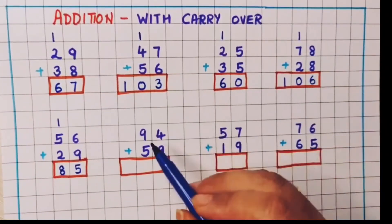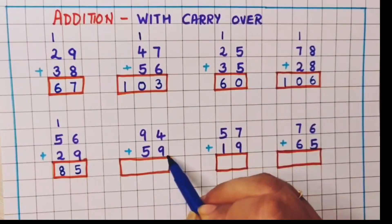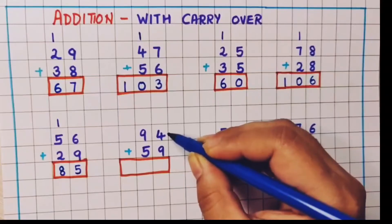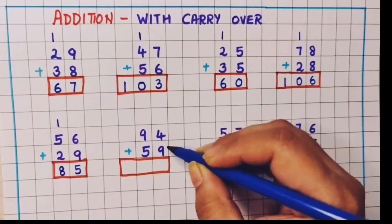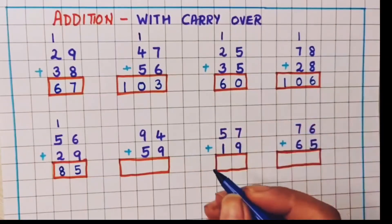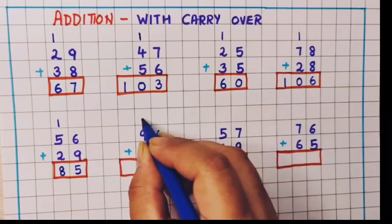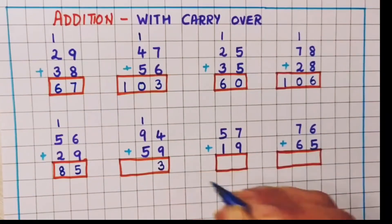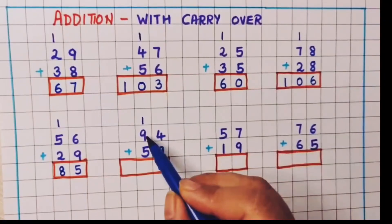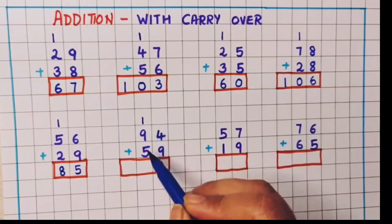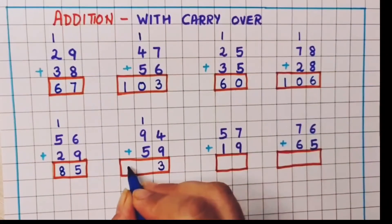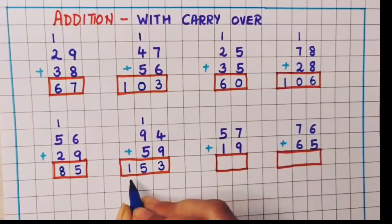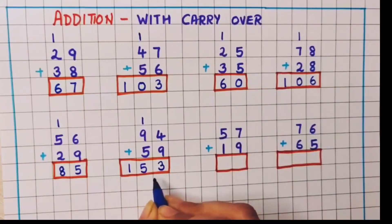Next problem: 94 plus 59. First we will do the addition of 9 plus 4. 9 plus 4 gives 13, so I will write 1 as a carry over and 3 down here. Now 9 plus 1 is 10 and 10 plus 5 is 15. So the answer is 153.